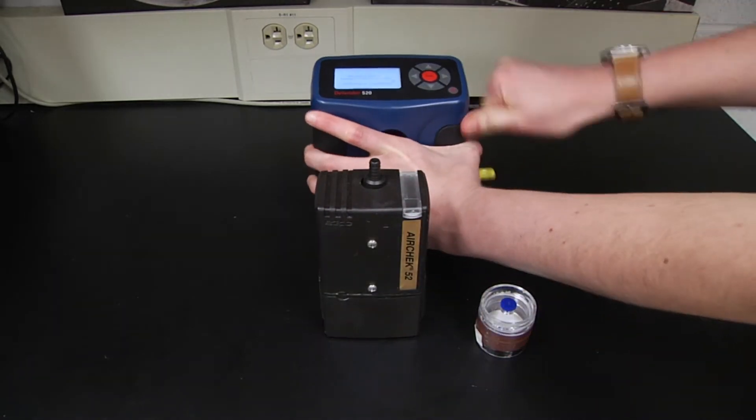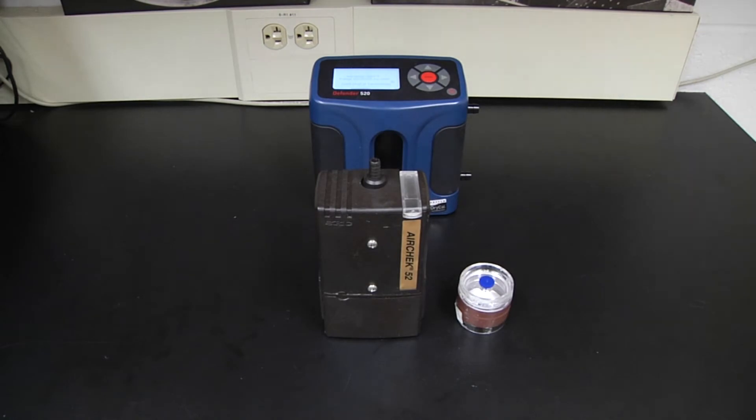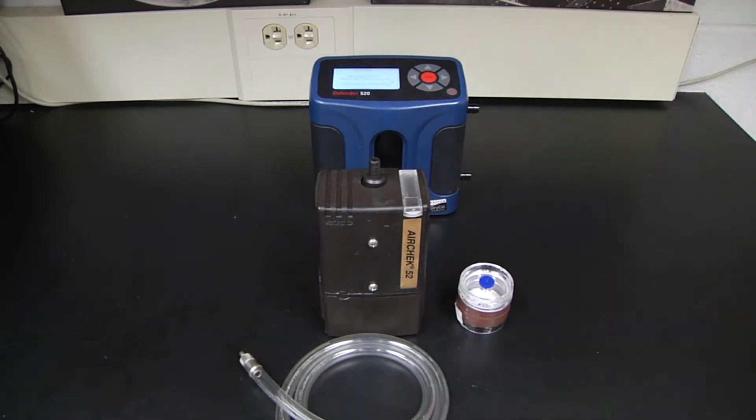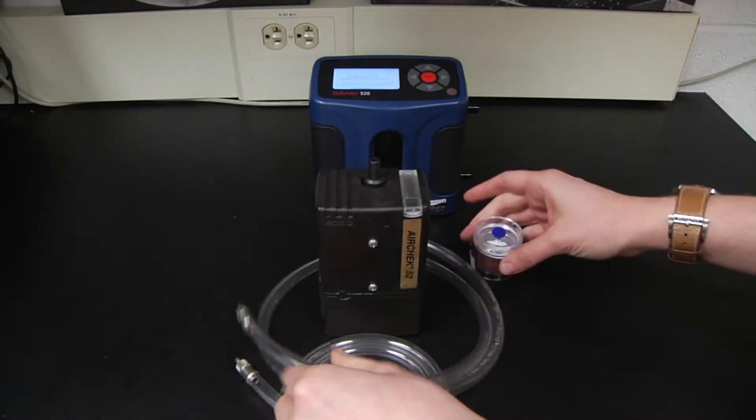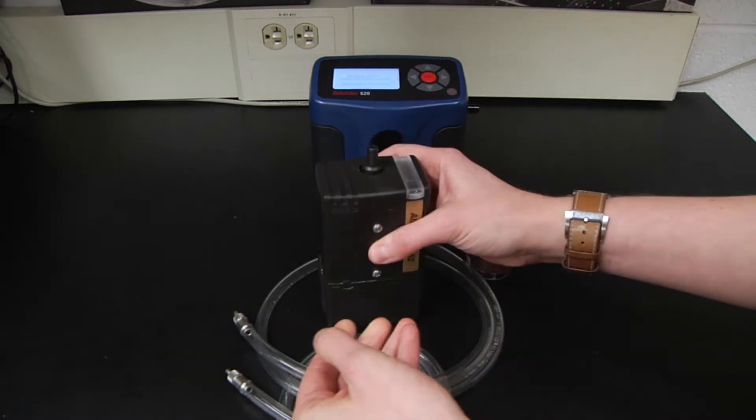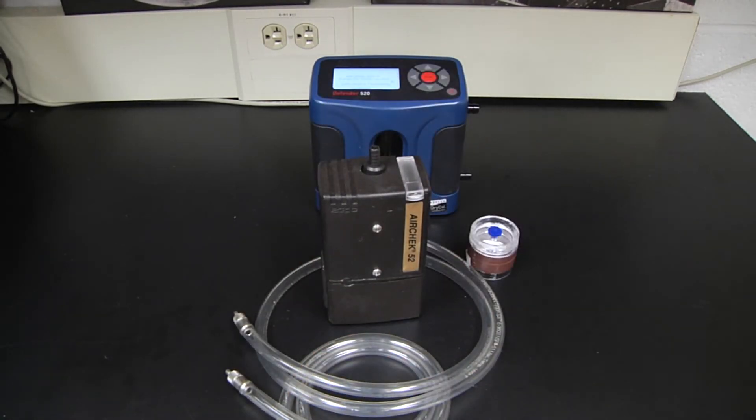During this time we'll prepare our media or sampling cassettes and inspect our tubing for cracks and leaks. Also inspect your pump to verify that it appears to be working and isn't on its last leg. Make sure that it doesn't look like it's been recently dropped.